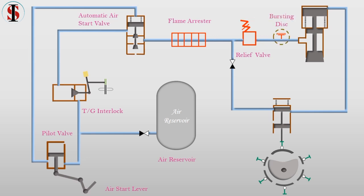Bursting disk. A rupture disk, also known as a pressure safety disk, protects a system from over-pressurization. Air distributor — it is the part of the starting air system responsible for providing pilot air to the starting air valve as per the correct firing order.